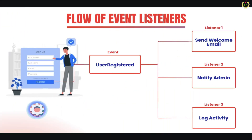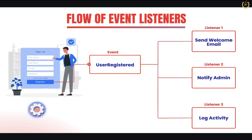Now let's understand the event-listener flow using a flow diagram. Here we have one registration form. When you submit the registration form, this will create a user and trigger one event called UserRegistered. As soon as the form is submitted, we trigger that event, and to perform tasks, Laravel provides listeners against this event. A listener is essentially a task that will be performed based on the event.